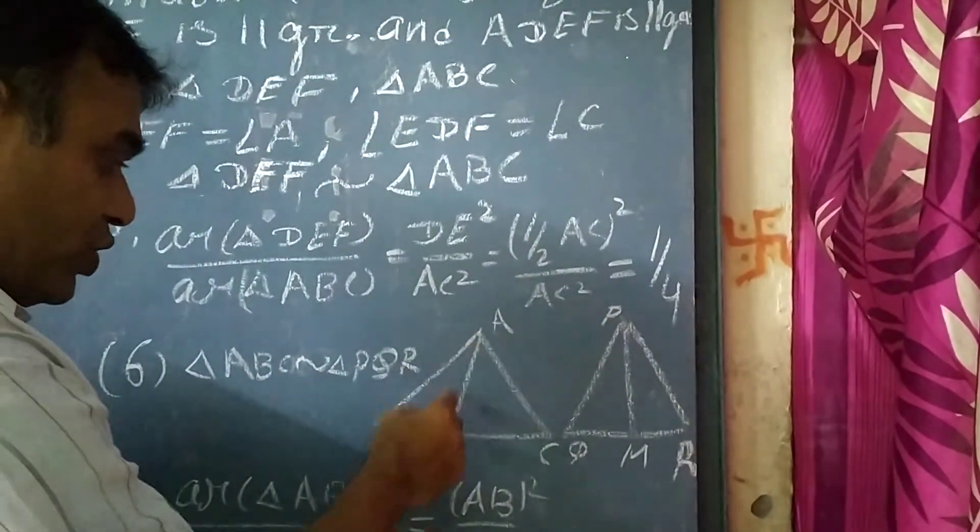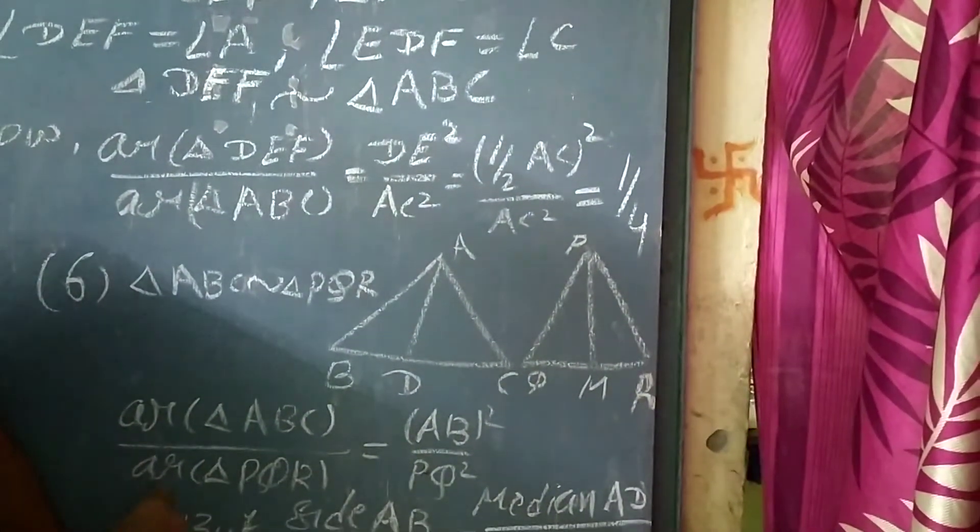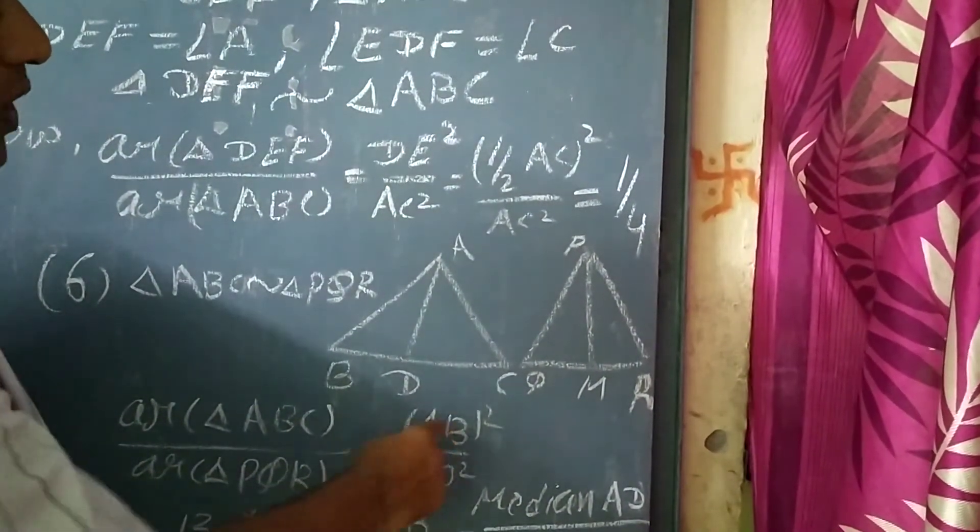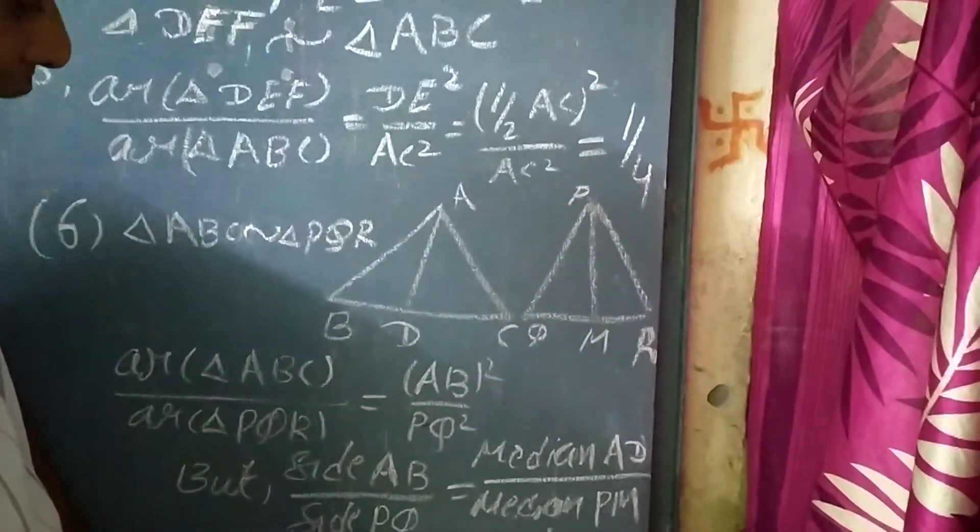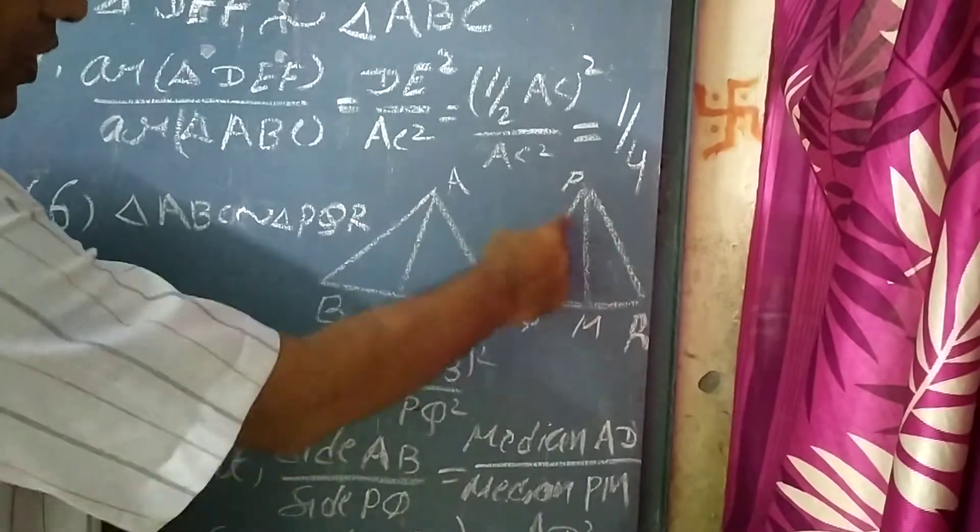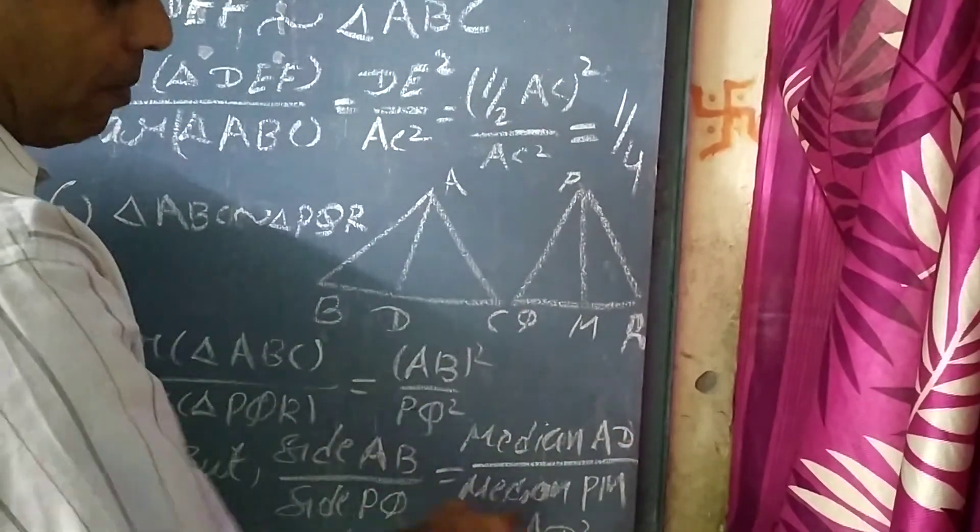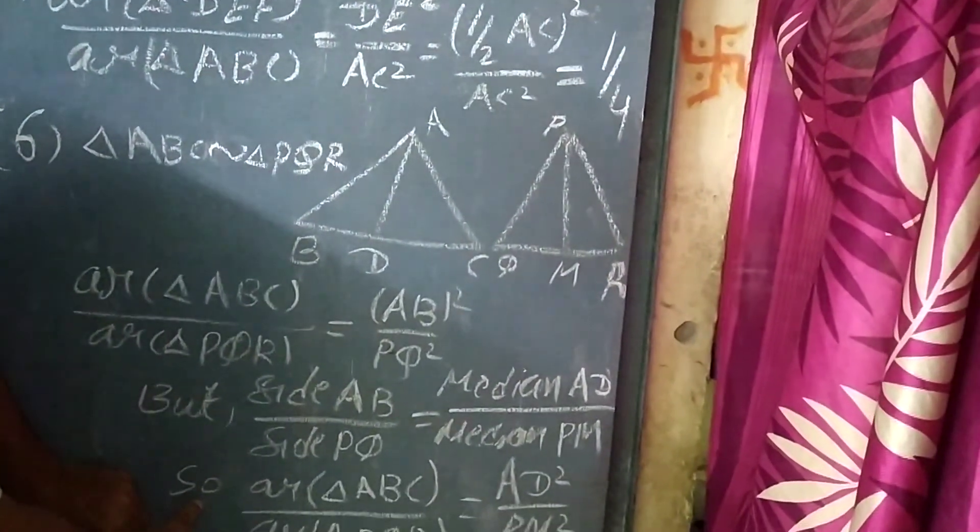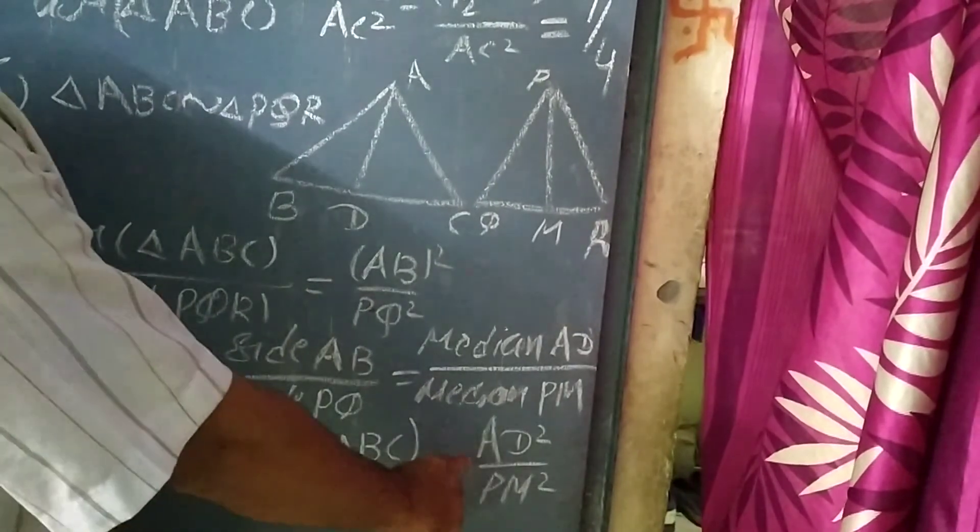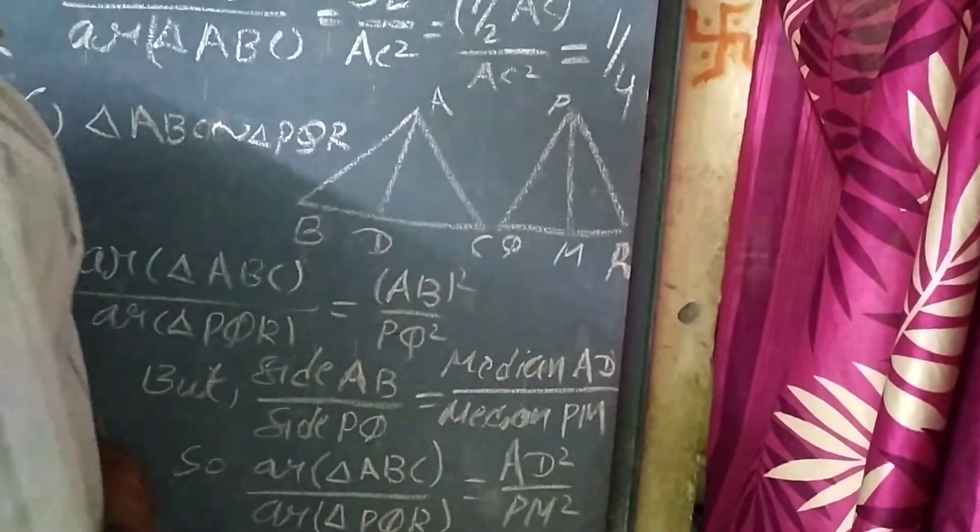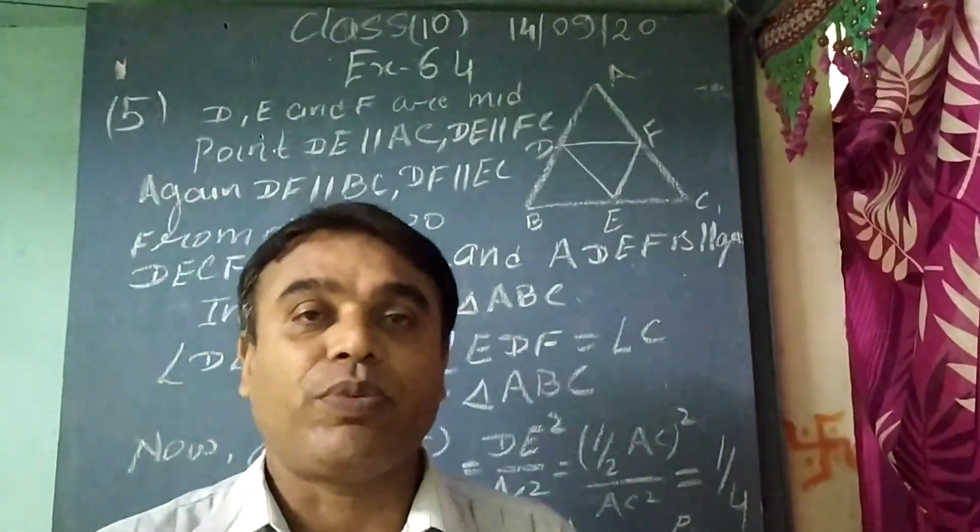So they are in ratios, that is, area of triangle ABC by area of triangle PQR equal to AB square by PQ square. In this way we have solved two problems of exercise 6.4.